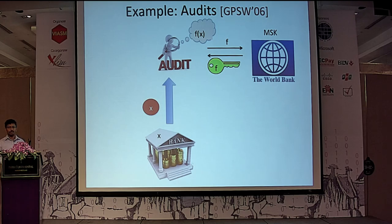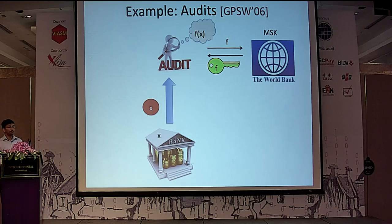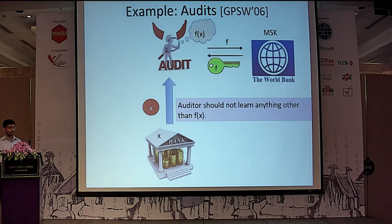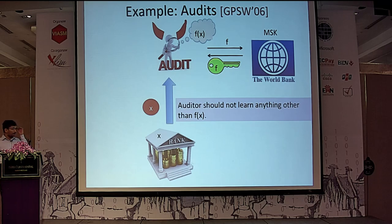What is a practical example of functional encryption? Say there are several banks and the world bank is the trusted master authority. An auditor wants to audit all these banks. One bank with data x encrypts and sends it to the auditor, the auditor gets the function secret key for f, computes f(x), and everyone is happy. We want to say that if the auditor is malicious, he should not learn anything about the bank's sensitive data other than f(x). This is one of the earliest motivating examples for functional encryption from GPSW'06.